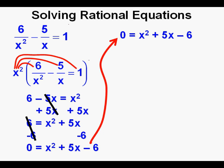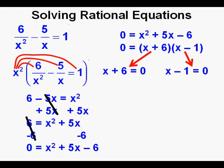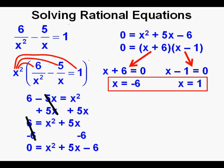We bring the equation to the upper right to continue working it out below. We set up a factored form to attempt to solve by factoring. The factors that work are quantity x plus 6 times quantity x minus 1. We separate these into two equations: x plus 6 equals 0 and x minus 1 equals 0. Solving the two equations, we have x equals negative 6 and x equals 1. Both solutions have been tested and are correct.